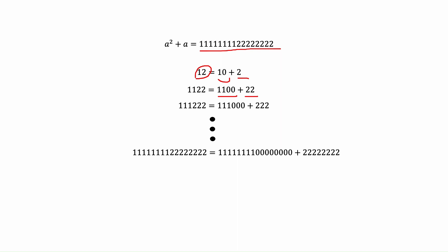And again we go to the next example. We add one one and one two, so it contains three ones and three twos. We can write it down as three ones followed by three zeros, plus two hundred twenty-two. And we can continue this pattern until we reach the exact number in our equation, which contains eight ones and eight twos. So we can write it down in exactly the same way as the smaller numbers: eight ones followed by eight zeros, plus eight twos.